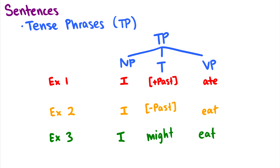Now let's talk about sentences. Sentences are what we call tense phrases or TPs, and the head of a TP is going to be T, which is the tense of the sentence. Three examples: 'I + past ate' — 'ate' is a past tense verb, so it gives tense to T as plus past. 'I eat' — 'eat' is present tense, so it gives minus past to tense. And in example three, T in a tense phrase can also carry auxiliaries. Any auxiliary or modal in a sentence will occur under T. So if I have 'I might eat', T does not have tense — it just holds the modal 'might'.